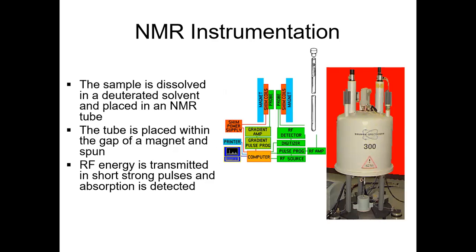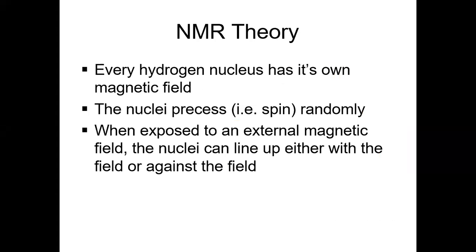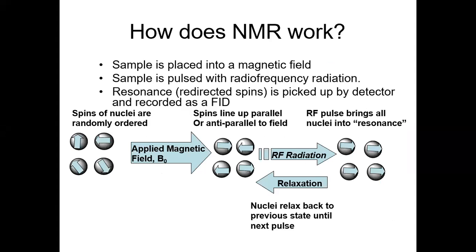For sample prep: dissolve a solid in a deuterated solvent, put the tube in the magnet, and the sample gets pulsed with radio frequency energy. This alters the magnetic spin states around the nucleus. When those spins relax between pulses, they give off energy that's picked up by a detector, generating the spectrum.